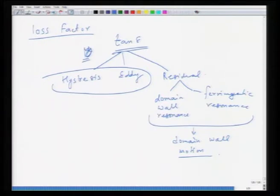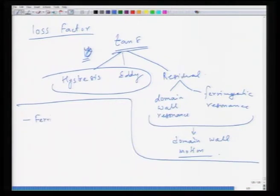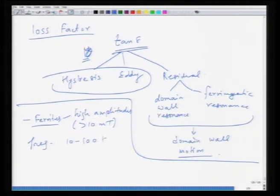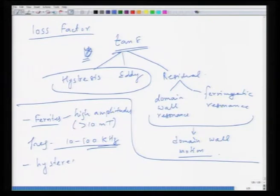In the case of ferrites which operate at high amplitudes — meaning anything in excess of 10 milli-tesla — and at frequencies of the order of 10 to 100 kHz, the power dissipation is mainly from hysteresis and eddy currents. In such applications, these are the two main mechanisms of power losses in ferrites.